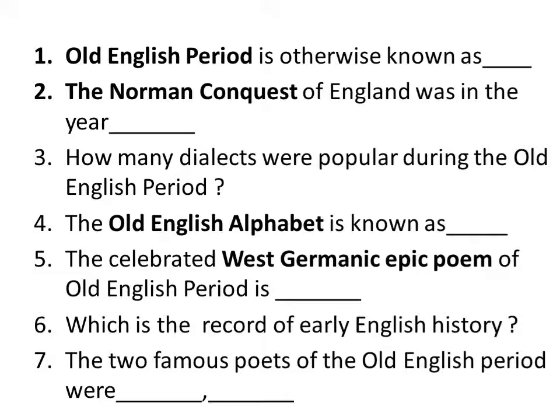The four dialects of the Old English period are Kentish, Mercian, Northumbrian, and West Saxon. The Old English alphabet is known as the runic alphabet. The celebrated West Germanic epic poem of the Old English period is Beowulf.